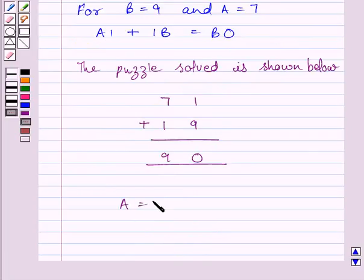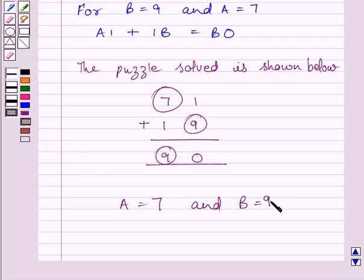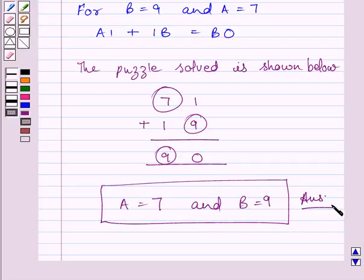And A is equal to 7 and B is equal to 9 is our required answer. This completes the session. Hope you understood the solution. Take care and bye for now.